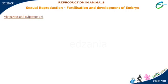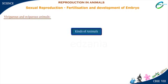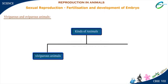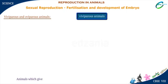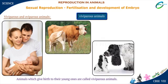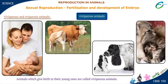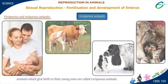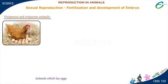Depending upon the mode of birth of individuals, animals are of two kinds: viviparous animals and oviparous animals. Animals which give birth to their young ones are called viviparous animals — humans, cows, dogs, and cats are viviparous animals. Animals which lay eggs are called oviparous animals.